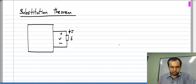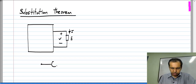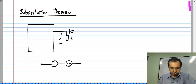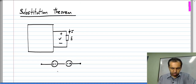Let me make the following construction. First of all, I will consider a series combination of two voltage sources connected oppositely. If you look at the polarities, this one has the positive sign on the left side and this one on the right side, and both have a value of V.